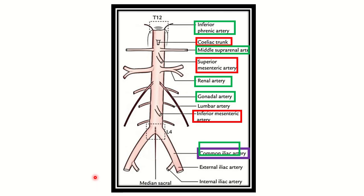In this picture we can see the abdominal aorta. It starts at the level of the thoracic 12 vertebra, then runs downwards, and at the level of the lumbar 4 vertebra it gives two terminal branches: the left common iliac artery and the right common iliac artery.